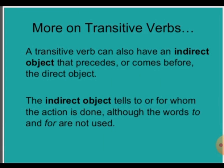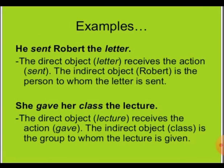A transitive verb can also have an indirect object that precedes or comes before the direct object. The indirect object tells to or for whom the action is done, although the words 'to' and 'for' are not used.